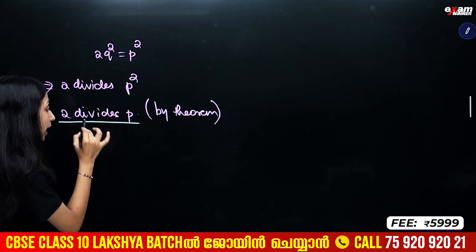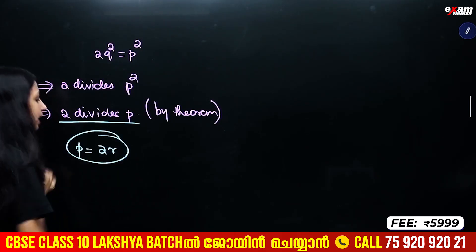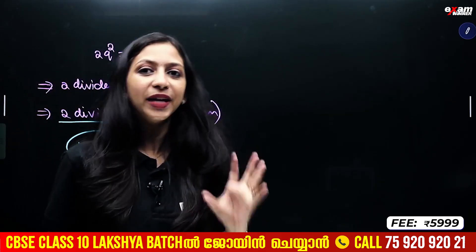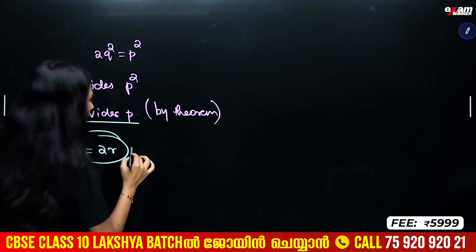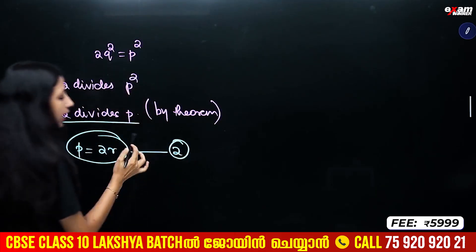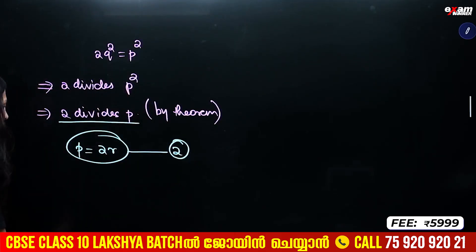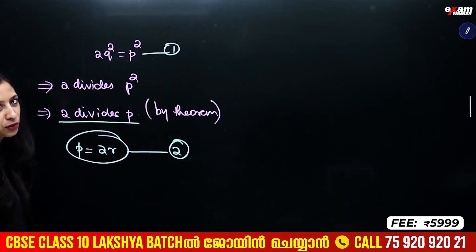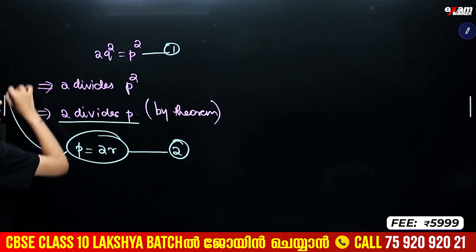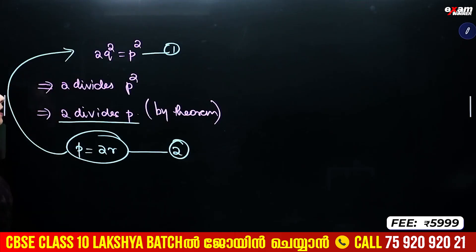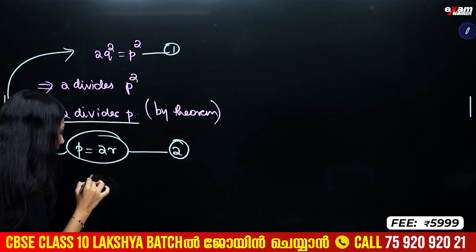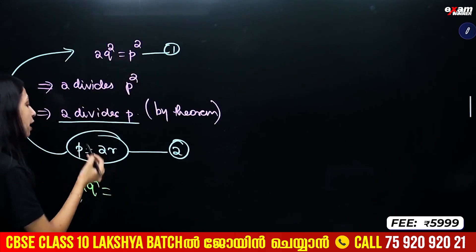P is some multiple of 2. So P equals 2r for some integer r. We substitute this into the equation: 2Q squared equals P squared equals 2r all squared.